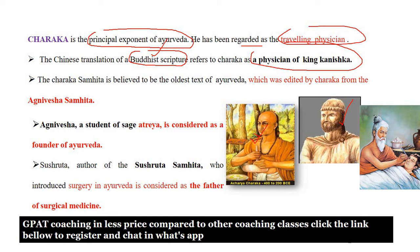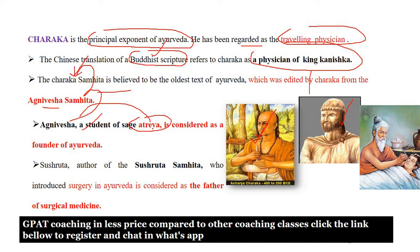Charaka wrote a book called Charaka Samhita, which contains the whole text of Ayurveda, edited by Charaka from Agni Vesha Samhita. Agni Vesha was a student of Sage Atreya — Atreya was the guru for Agni Vesha. Agni Vesha learned about Ayurveda from Atreya and wrote Agni Vesha Samhita, from which Charaka compiled Charaka Samhita. Therefore, Atreya is considered the founder of Ayurveda.